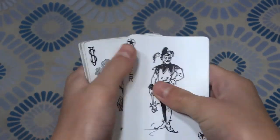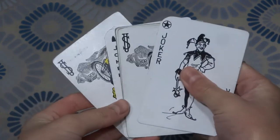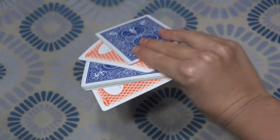And then you turn it over. And then you grab the two bottom cards and the two top cards. And then you show them, oh, there's four Jokers of different colors.